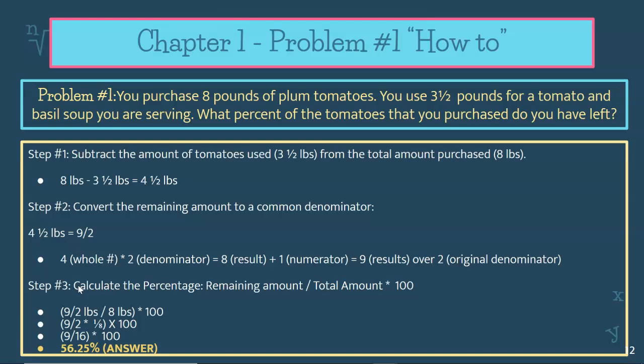Problem number one: you purchase eight pounds of plum tomatoes. You use three and a half pounds for a tomato and basil soup you are serving. The question here is what percent of the tomatoes that you purchased do you have left? Before you can calculate that, you need to figure out a couple of other things first using information from chapter one and the different steps.